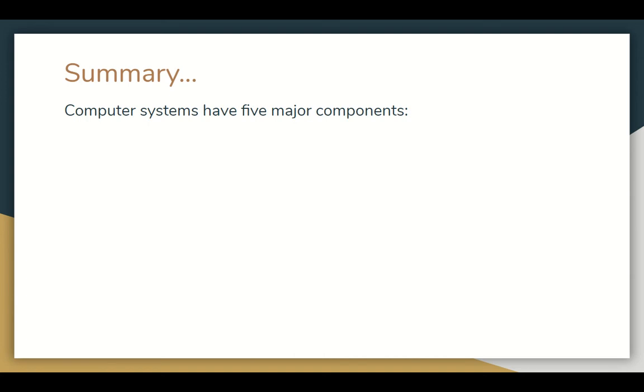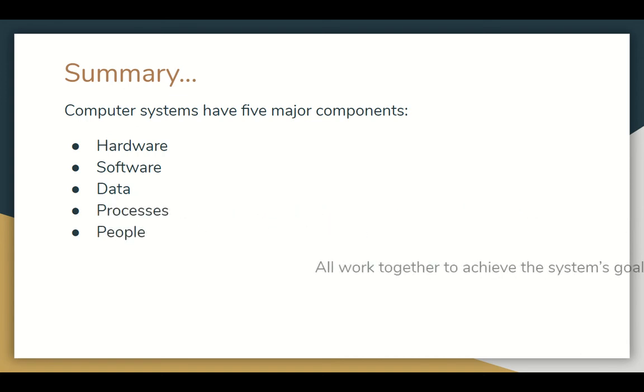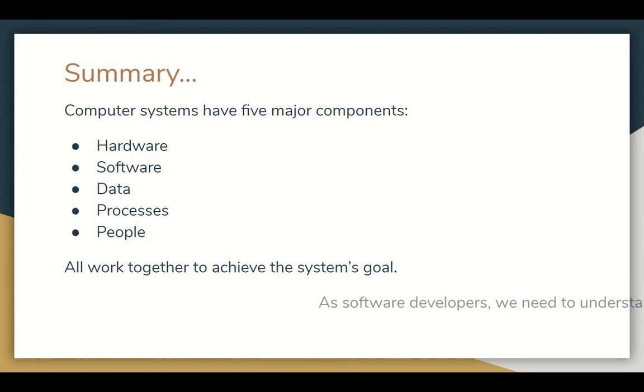So in summary, computers have five major components: hardware, software, data, processors, personnel, if this thing hurries up. Can't make these go any faster. They all work together to achieve the system's goals.